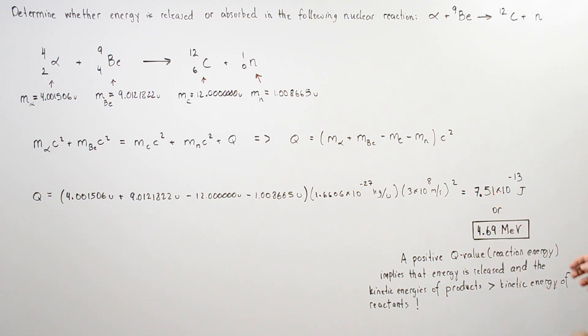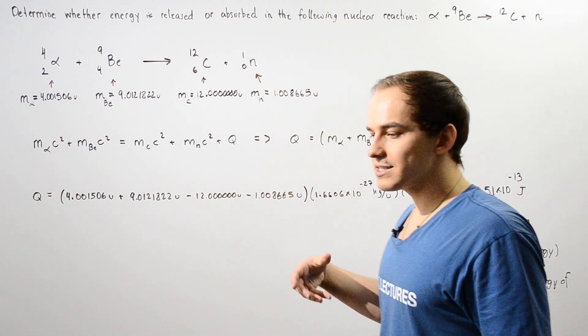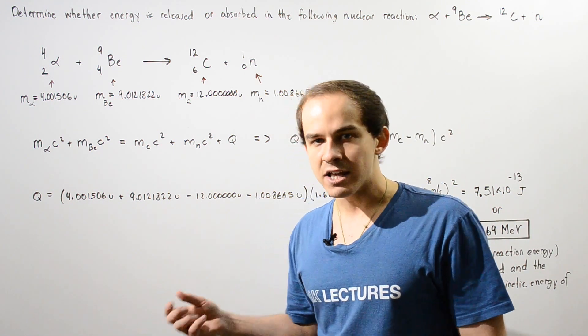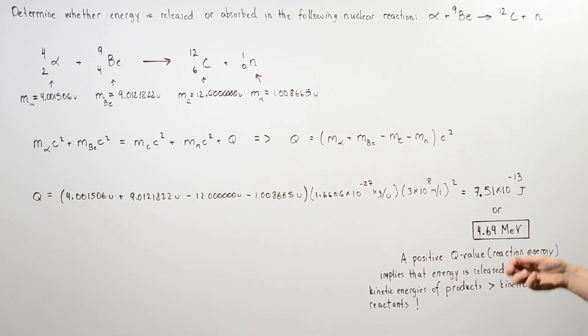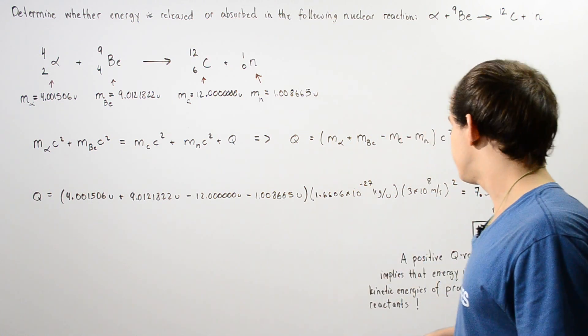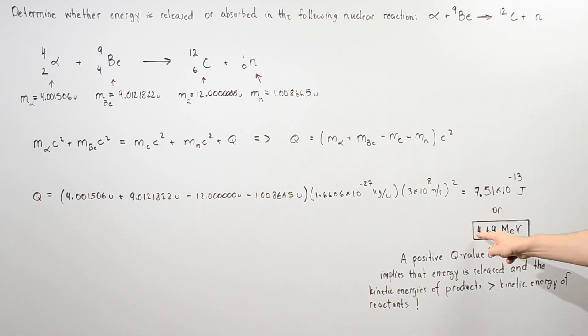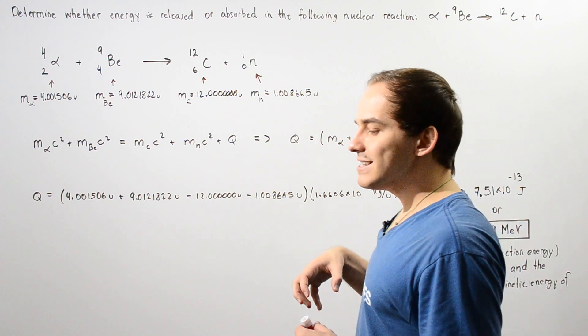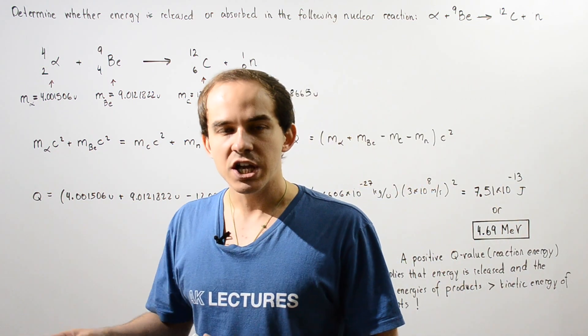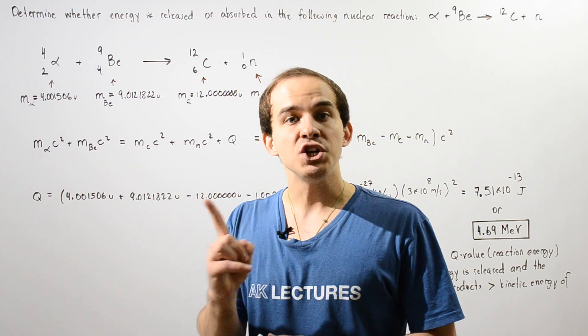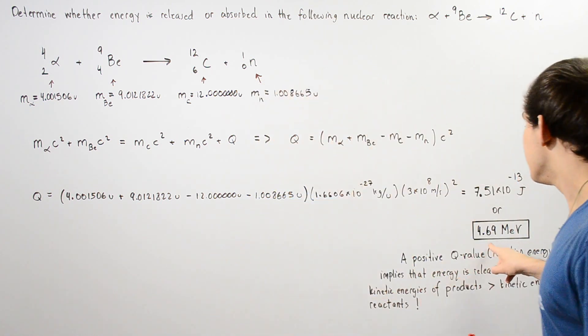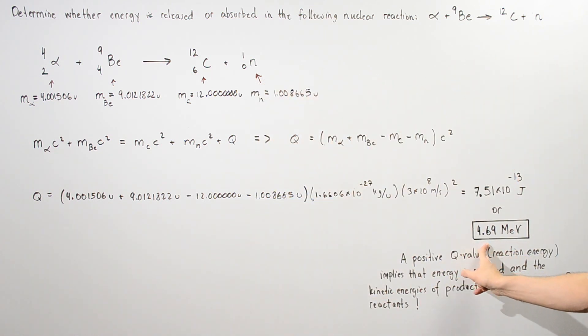If we take this and divide by 1.6 times 10 to the negative 19, then divide by 10 to the 6, we get the energy in mega electron volts. So 4.69 mega electron volts is the quantity of energy that is released. We know it's released because this is a positive value.